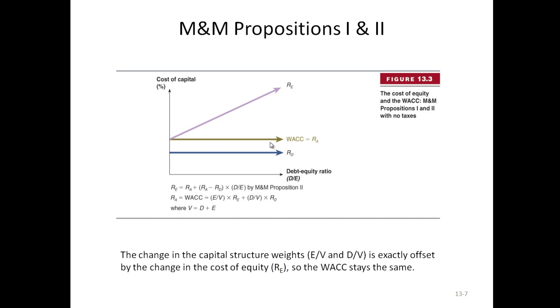So that's Proposition 2 of the Modigliani-Miller Theorem under the assumption that there are no taxes and no bankruptcy costs. In the next tutorial, we'll take a look at the case where we add taxes, but we still don't have bankruptcy costs. Case 2.